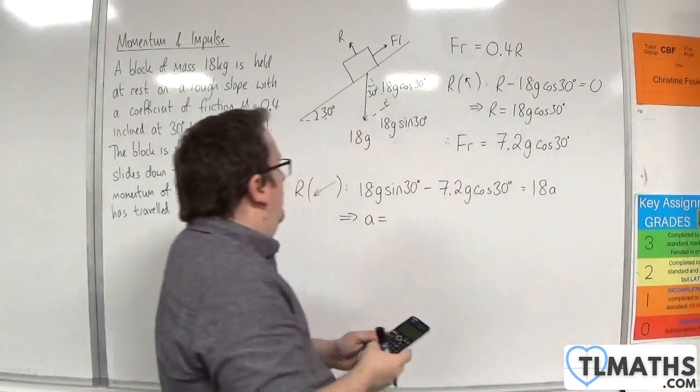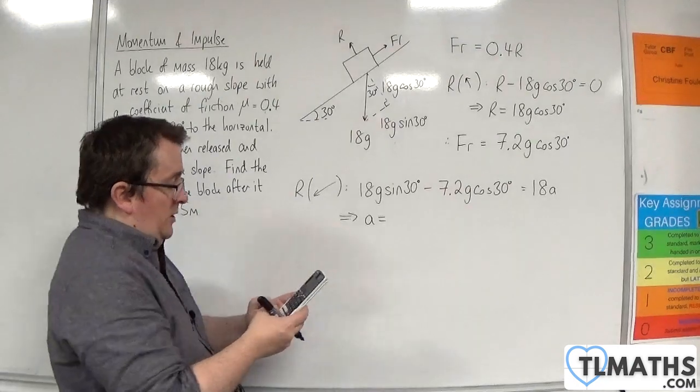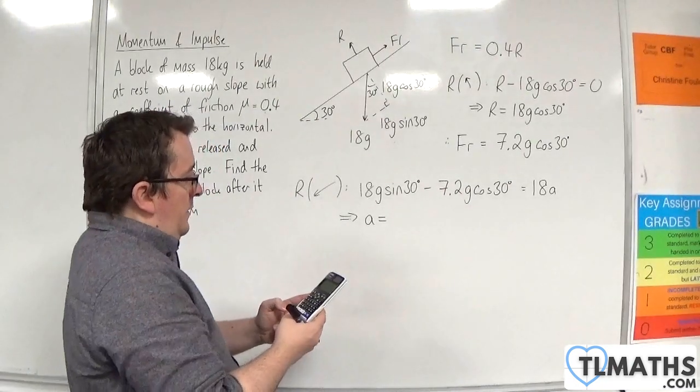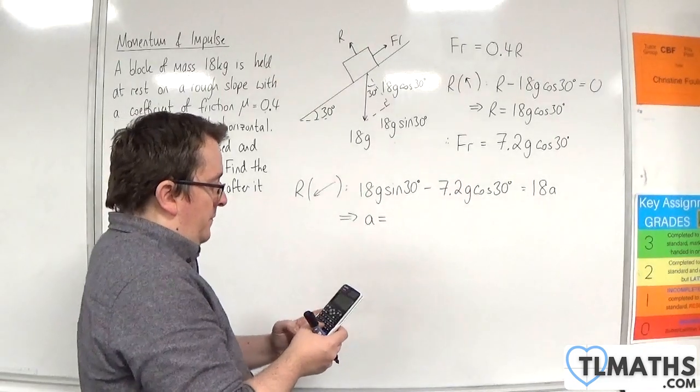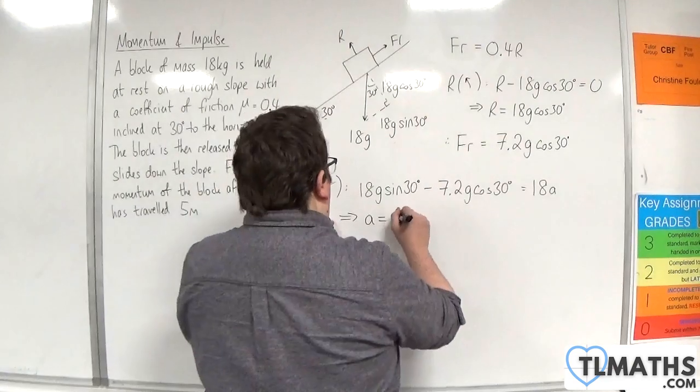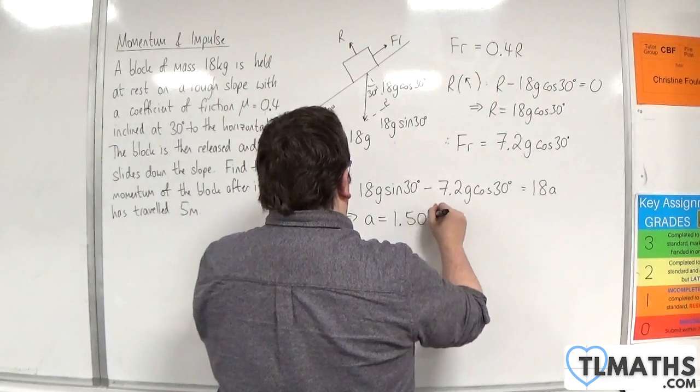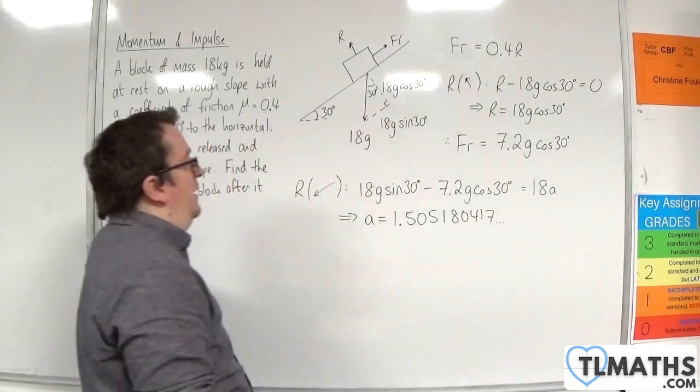So let's put this in with g as 9.8. So 18 times 9.8 times sin 30, take away 7.2 times 9.8 times cos 30. And then divide that by 18. And we get 1.505180417 metres per second per second.